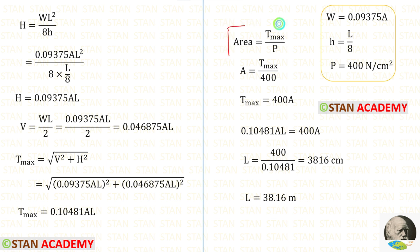We know the formula. The cross sectional area is equal to the maximum tension upon the permissible stress. The permissible stress is given as 400. Let us apply that. Let us take 400 on the other side, so it will come in the numerator. For the maximum tension, we can apply this.